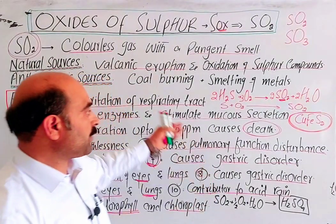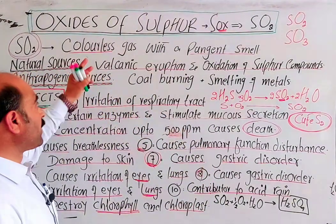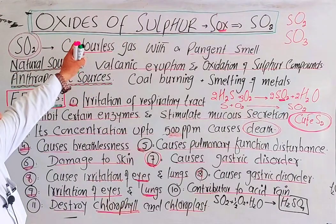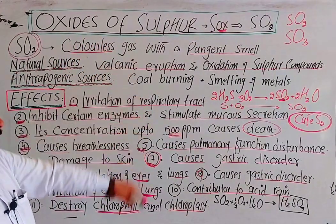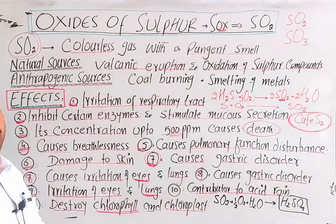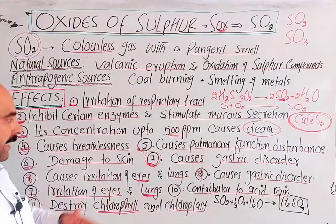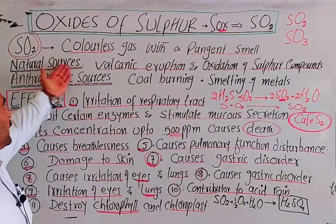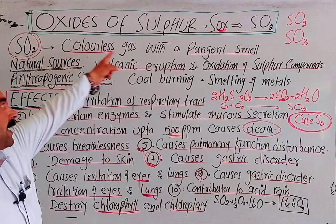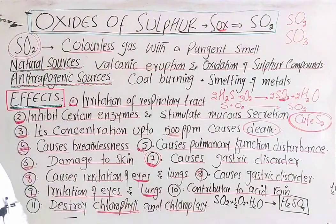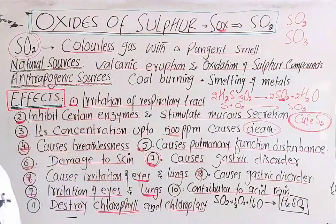So students, these were all about the oxides of sulphur, especially sulphur dioxide as a pollutant — its adverse effects, sources, and physical properties. Thanks a lot for watching the video. Take a screenshot of it.